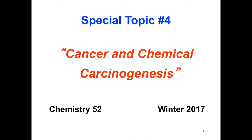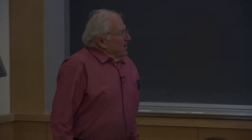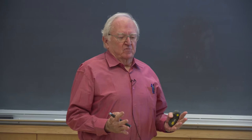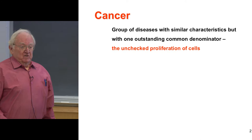Special topic number four is going to be today and tomorrow. It's a long special topic, but a lot of very interesting chemistry. Cancer — you all basically know what cancer is. The one outstanding common denominator, because you might have a hundred different types of cancer, every different kind of cell really has its own cancer, its own tumor. The common denominator is the unchecked proliferation of cell growth, and this is normally what will kill the cancer patient.